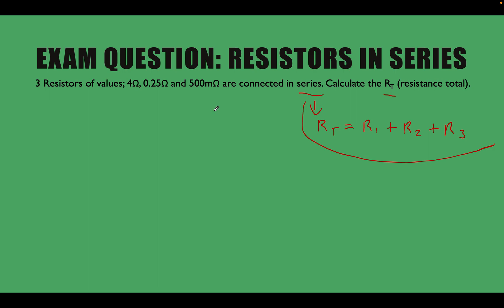Now what we've got to be focusing on is, let's just label these. So let's call 4 ohms R1, 0.25 ohms R2, and 500 milliohms R3. Let's circle that so we know that now.